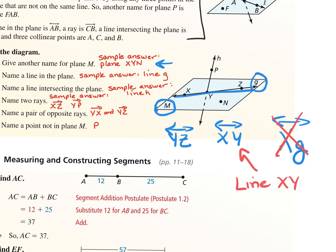For the next one — the line intersecting the plane — that is the line going straight down through here. Notice there is a lowercase letter, so you can call this line H. Or you could use the two points on the line, PY, but you need to include the line symbol on top. For the rays in this picture, use two points with a ray symbol on top — no lowercase letters.